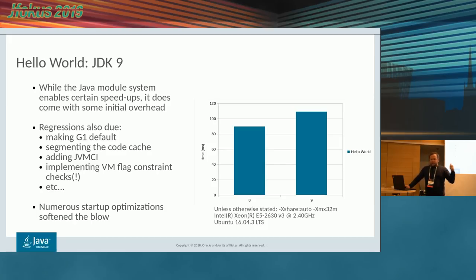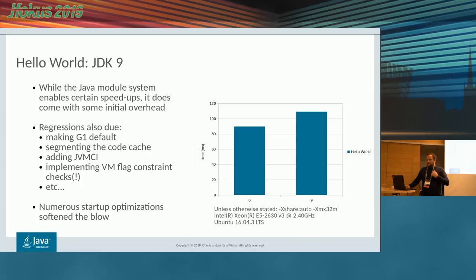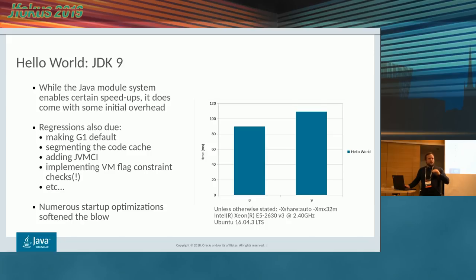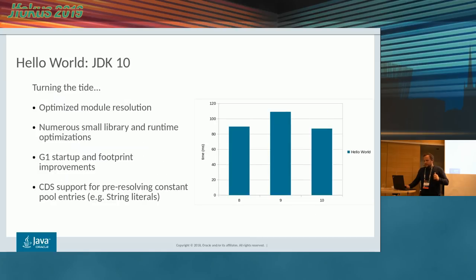JVMCI was added to support Graal as an experimental compiler in Java 9, adding a little bit of overhead for everyone. My favorite regression was the VM flag constraint checking added in Java 9, which adds on the order of 15 million instructions being retired on every VM start just to check if your command line arguments are within the allowed range — even when there are no command line flags at all.